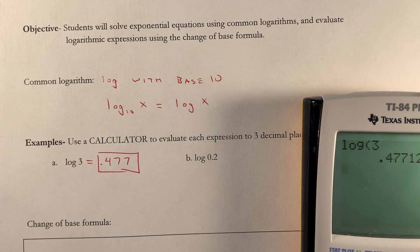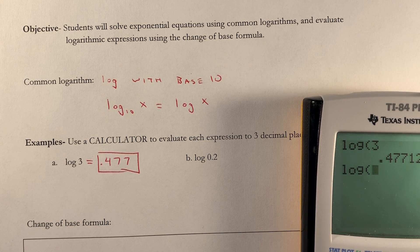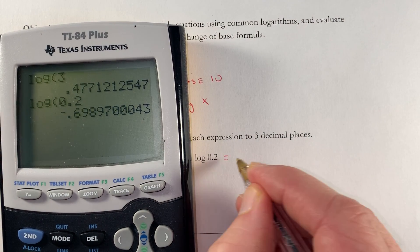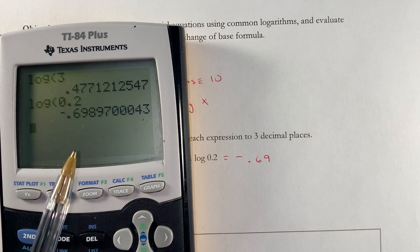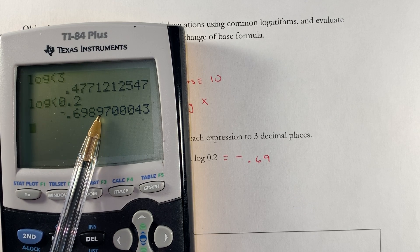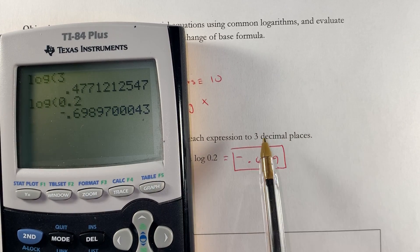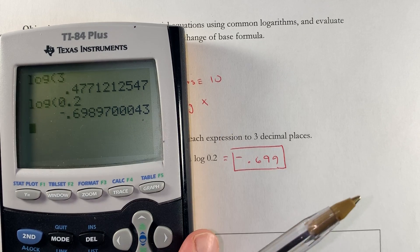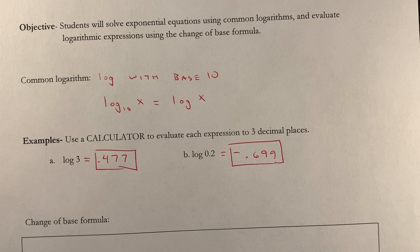And then log 0.2. Again, we'll use that log button right there next to the 7. Log 0.2, and that equals negative .69, and then that third digit is an 8, but behind it is a 9. So we'll use that 9 to bump that up to a 9. Remember if that next digit we're keeping, if that fourth digit is 5 or bigger, we go ahead and bump that up 1. That's how you evaluate a common log in your calculator.